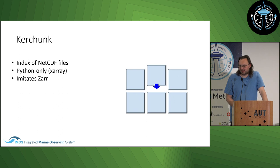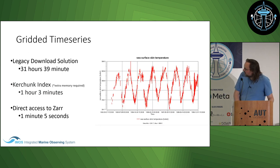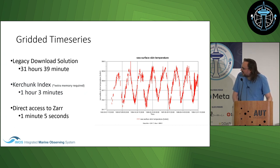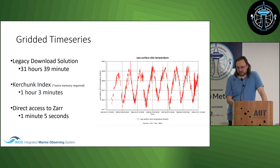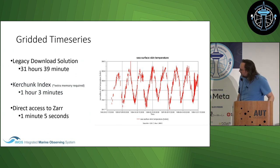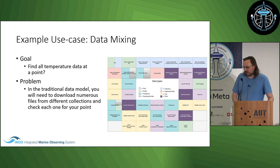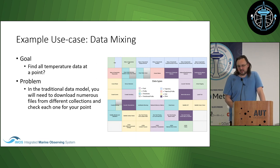Here's the performance we actually saw: our legacy download solution, downloading all the NetCDF files to subset them, took 31 hours. A Kerchunk index — which sadly needed extra memory because the library loads everything into memory — took one hour. Direct Zarr access took one minute, because we only needed to access the exact chunks required to create a time series of a single point over that large dataset.